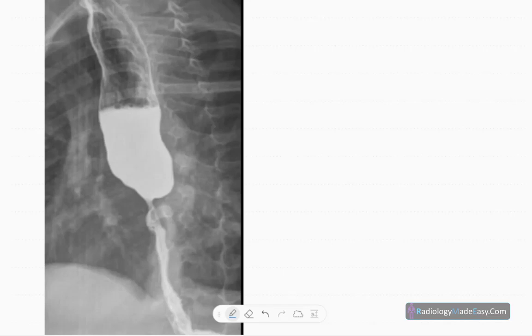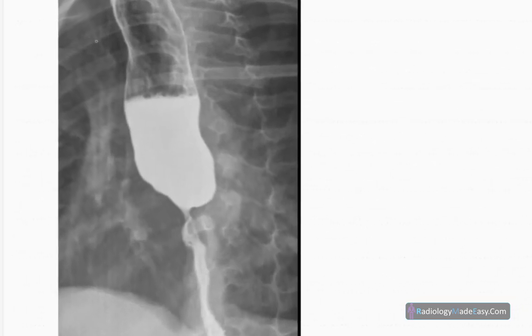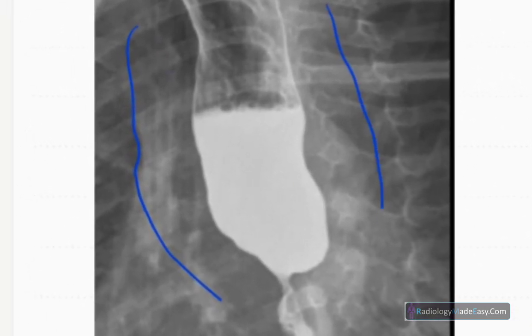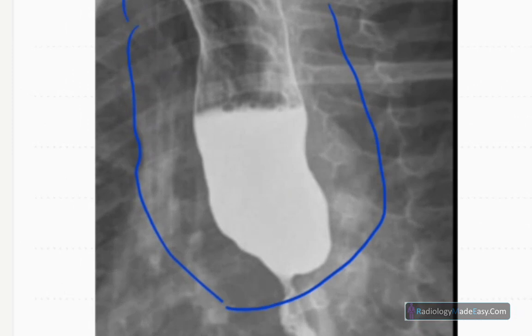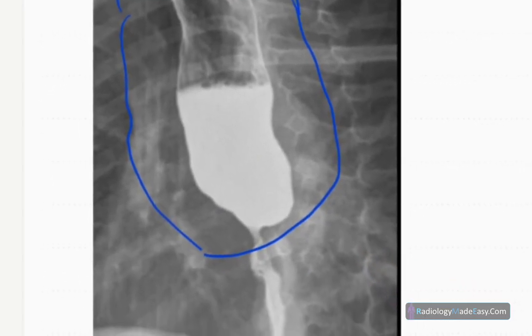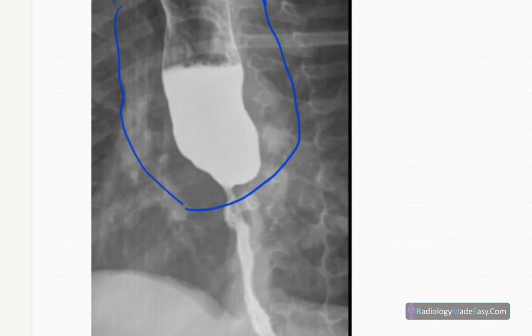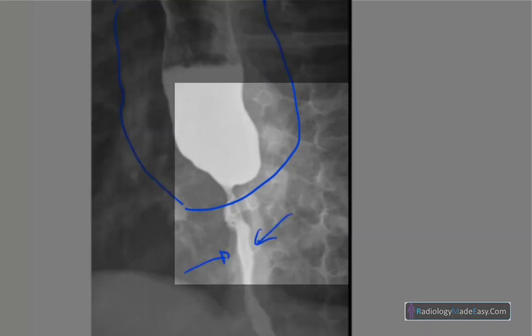You can see a dilation of the esophagus here with the contrast-air level. It is dilated, and there's this smooth concentric regular narrowing of distal third of the esophagus. You can see the distal third of the esophagus.